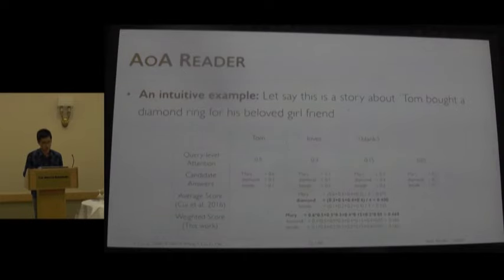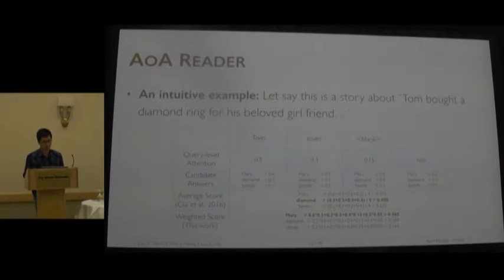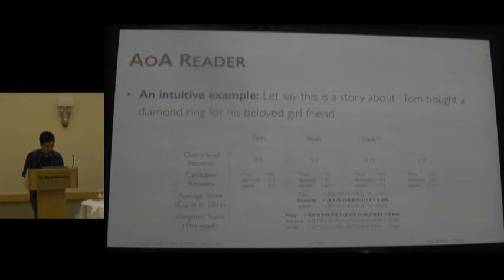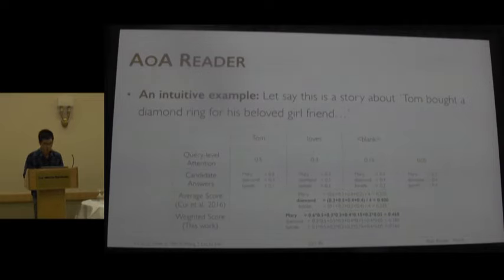Consider a short story: 'Tom bought a diamond ring for his beloved girlfriend.' The query is 'Tom loves ___.' The pair-level attention is calculated for each query word. There are three candidates: Mary, Diamond, and Michelle. In our previous work, we averaged across all pair-level attentions, and the final answer would be Diamond. In our current work, we assign different weights to each pair-level attention, so the final answer becomes the correct one.